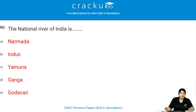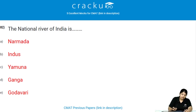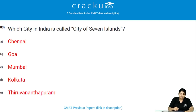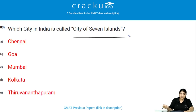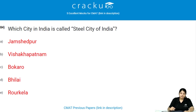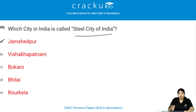The national river of India is the Ganga. Which city in India is called the City of Seven Islands? Mumbai is called the City of Seven Islands. Which city in India is called the Steel City? Jamshedpur, located in Jharkhand state, is known as the Steel City of India.